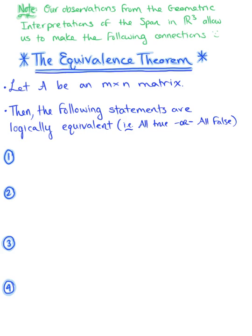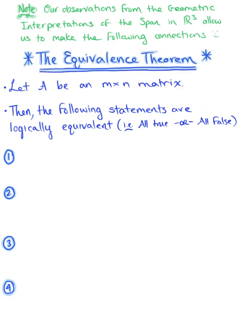From our observations of the geometric interpretations of the span in R3, we are able to make the following conclusions and connections. This is the ever important equivalence theorem — a super important theorem that we will be continuously referencing throughout the rest of the course.